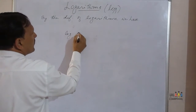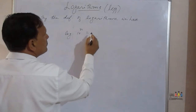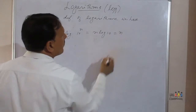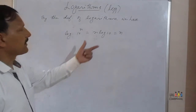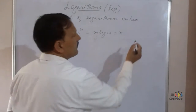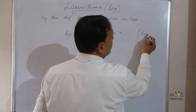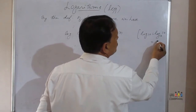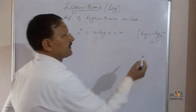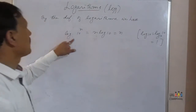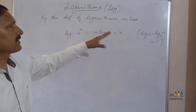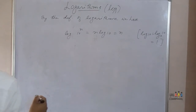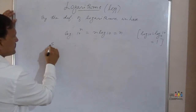By the definition of logarithms, log of 10 raised to n equals n times log 10, which is equal to n. Because log 10 means log of 10 to the base 10, and that is equal to 1. So this log of 10^n simply equals n. We will explain with some more examples.